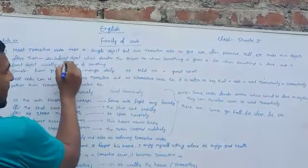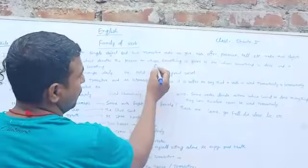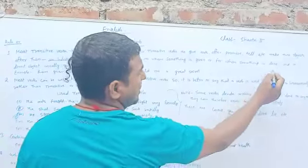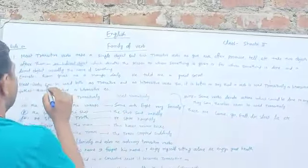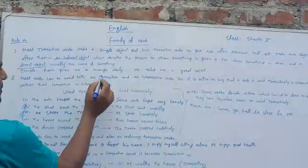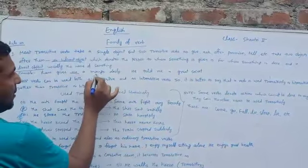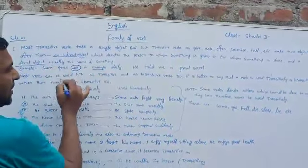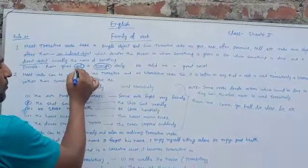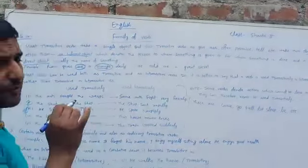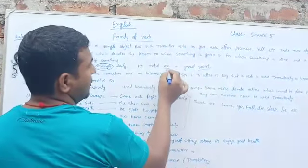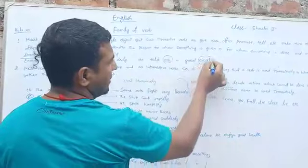After them, an indirect object — which denotes the person for whom something is given or for whom something is done — and a direct object, usually the name of something. As: 'Ram gives me a mango.' Here, 'me' is the indirect object and 'mango' is the direct object, because 'me' is a person and 'mango' is the name of something. Another example: 'He told me a great secret.' 'Me' is the indirect object and 'secret' is the direct object.